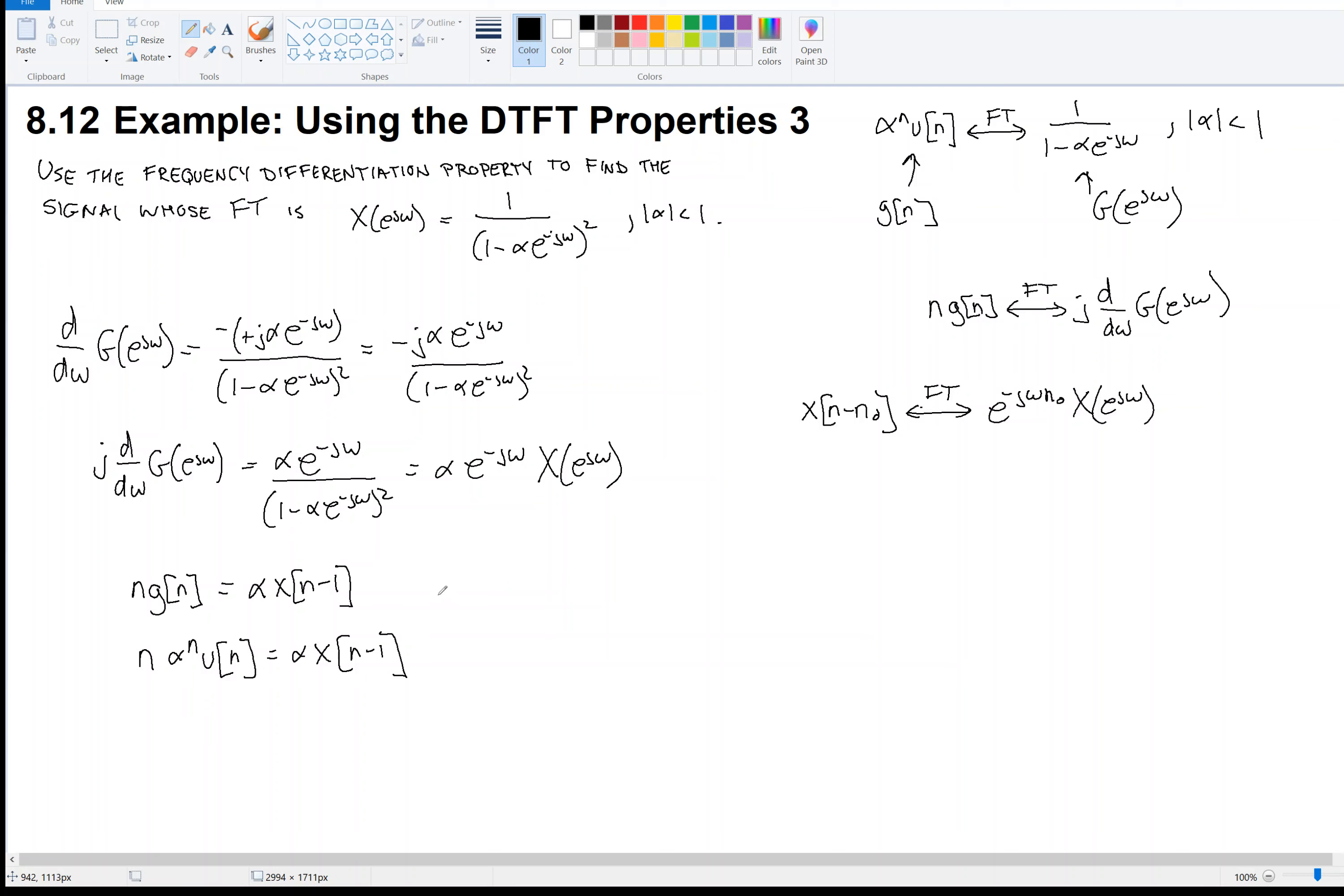So if that's true, then if I add 1 to n, (n+1)·α^(n+1)·u[n+1] equals α·x[n], right? That's what I want. So I can divide by alpha, and I get x[n] equals, and when I divide by alpha with the n+1 there, α^(n+1) divided by α is simply α^n·u[n+1].